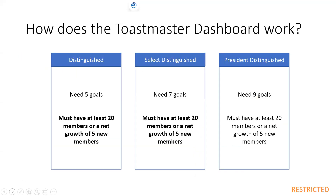Let's do some scenarios with the dashboard. Remember: to be distinguished, you need five goals and at least 20 members or a net growth of five new members; select distinguished needs seven goals; president distinguished needs nine goals. Scenario one: eight goals completed, 20 members — that's select distinguished. Scenario two: started the year with a base of 14 members, completed five goals, grown to 19 members — that's distinguished.